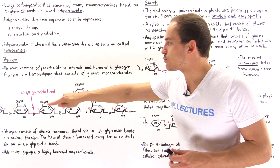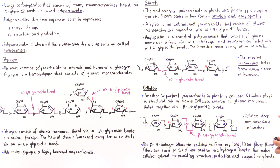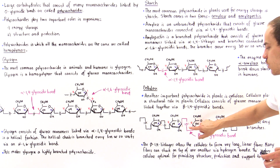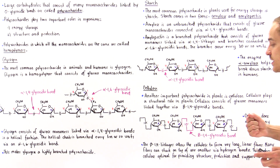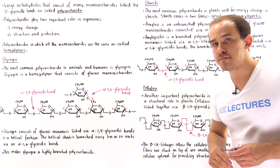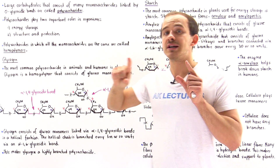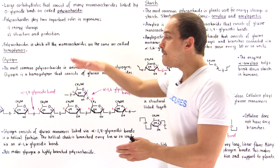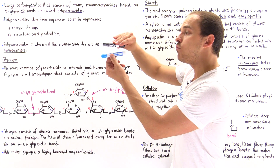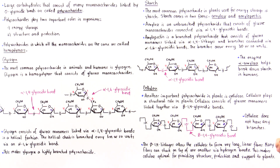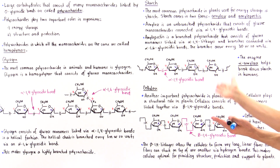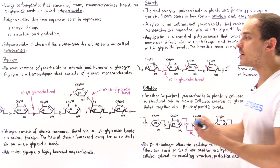Unlike glycogen and starch, which form helical structures, cellulose forms long, linear, straight-chain fibers as a result of the conformation of the beta-1,4 glycosidic bonds. It is called a 1,4 glycosidic bond because the bond is between carbon number one of one glucose and carbon four of the adjacent glucose. But the orientation of the anomeric carbon is the beta arrangement, meaning this bond points in the same direction — upward — giving cellulose that long linear structure. As a result, many of these fibers can stack on top of one another and interact via hydrogen bonds, giving cellulose very high tensile strength.